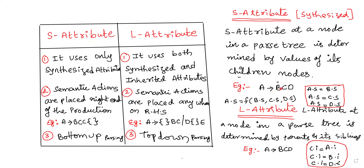You can see the example here. A tends to BCD, so the main node is A. A is determined by either B, C, or D. A.S is equal to B.S, A.S is equal to C.S, and A.S is equal to D.S. So the value of A depends on its children nodes.